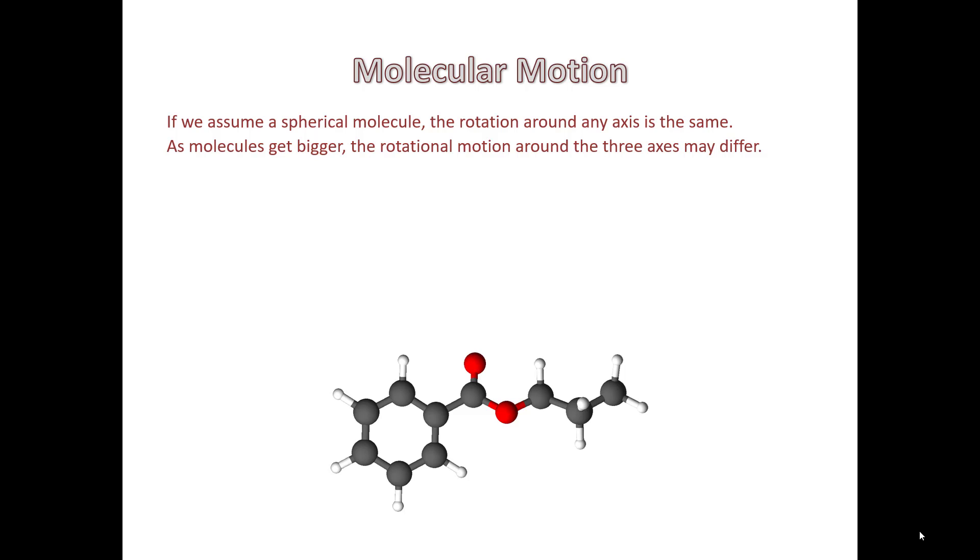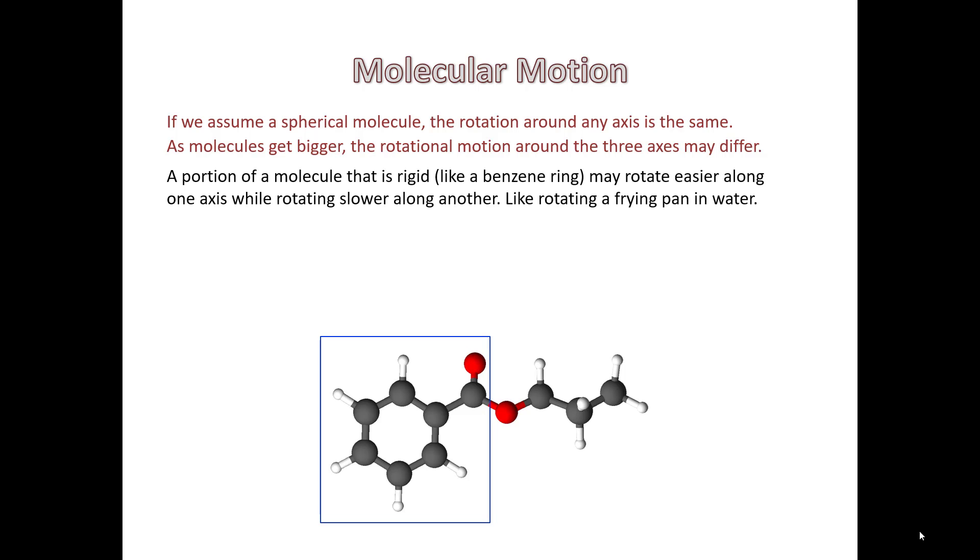On the other hand, molecular motion also plays a factor. If we assume a spherical molecule, the rotation about any axis is going to be the same, but as a molecule gets bigger, the rotational motion around the three axes may differ. If a portion of a molecule is rigid, like a benzene ring, it may move easier or rotate easier along one axis while rotating slower around another axis. It's kind of like rotating a frying pan in water.